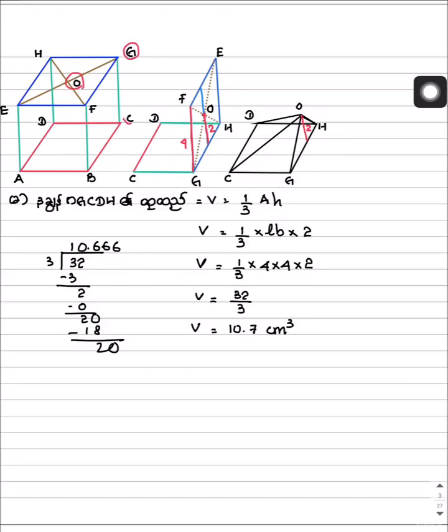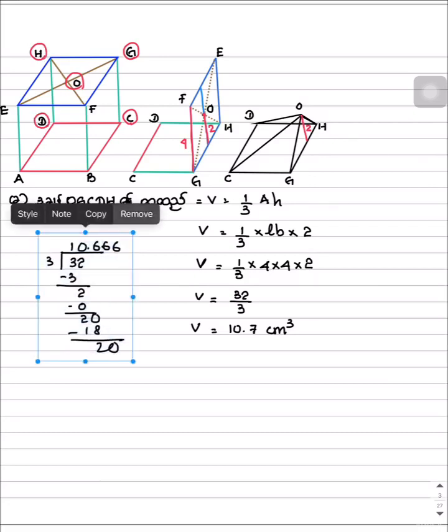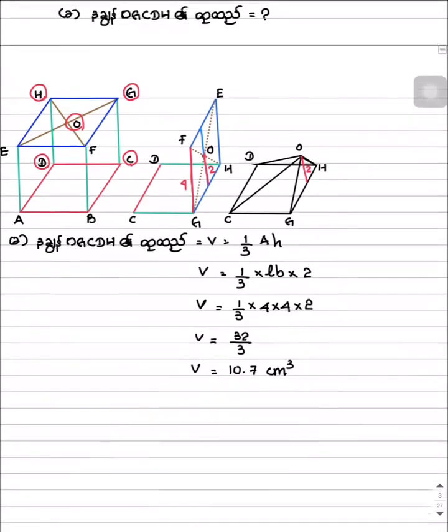This is the first one. The first one is O, G, C, D, H. This is very simple. If you want to make the OGCDH, you can use the OGCDH, but you can use the OGCDH.